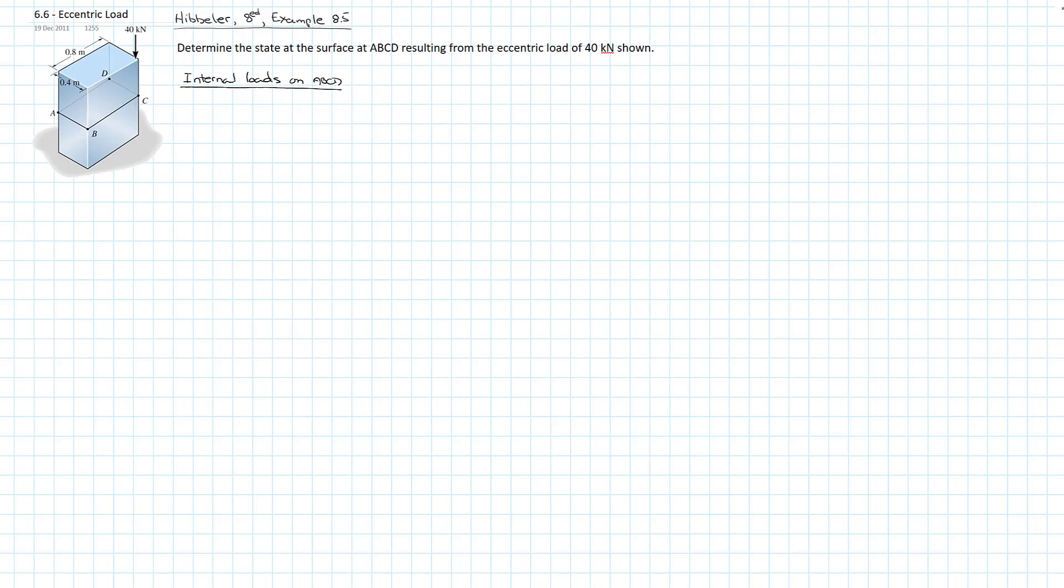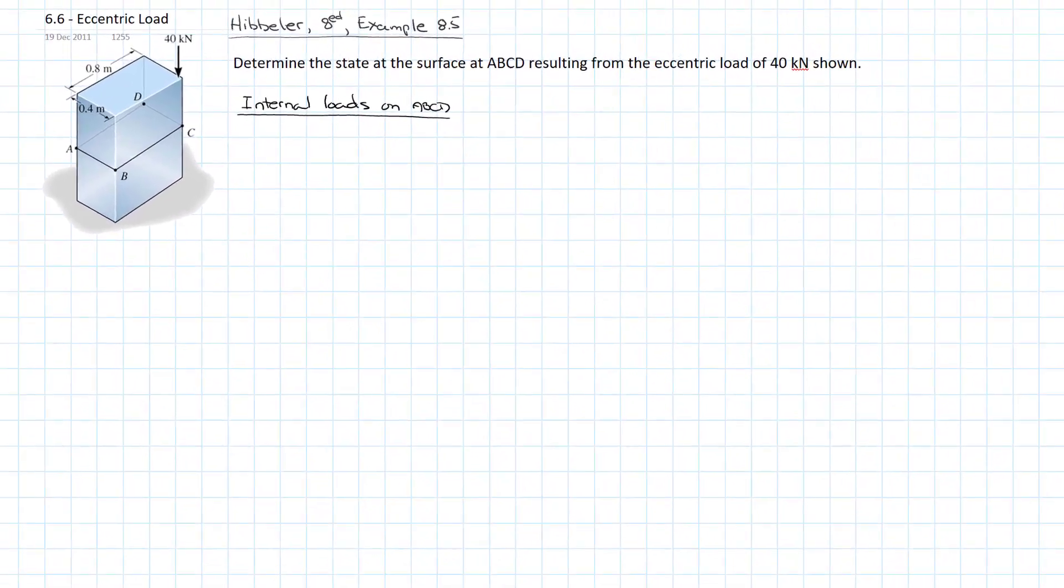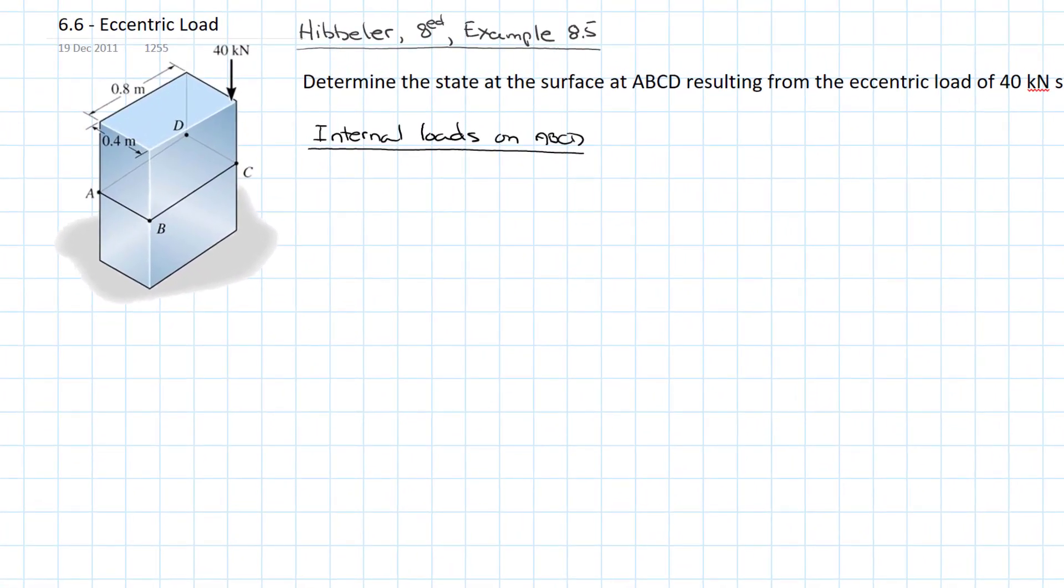So we have a block or a column. The dimensions are shown on the slide, and the question is to determine the state of stress at the surface ABCD, which is partway down the column from the eccentric load of 40 kilonewtons, which is not at the centroid of the block but rather on one of the corners. When we did axial loading, we knew that one of our assumptions was that the axial load was acting on the centroid of the cross section. Where it's not acting on the centroid of the cross section, it's also going to create a moment as a result of that eccentricity.